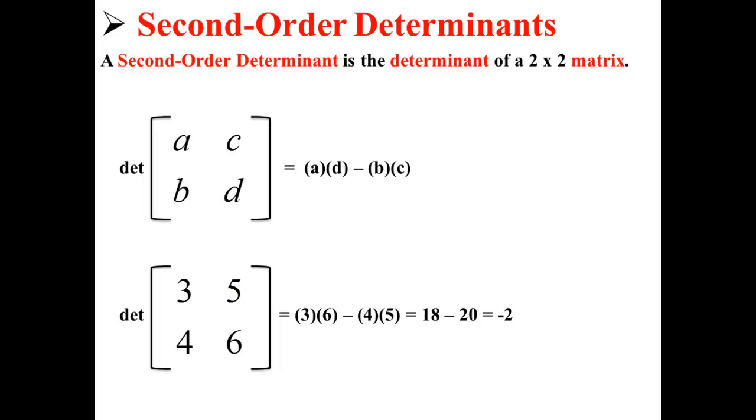The determinant of this matrix is equal to 3 times 6 minus 4 times 5, which is equal to 18 minus 20, which is equal to negative 2. So the determinant of this 2 by 2 matrix, its second-order determinant, is equal to negative 2.